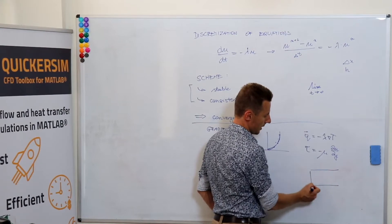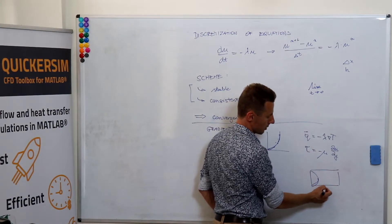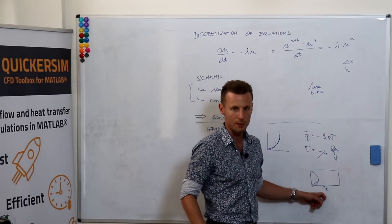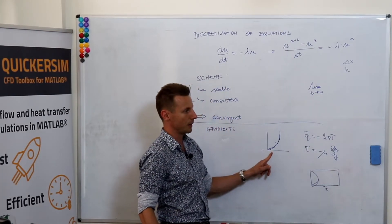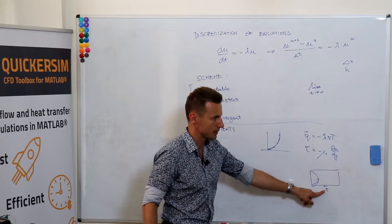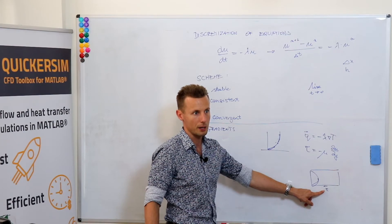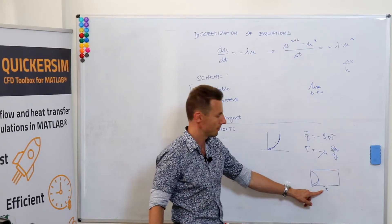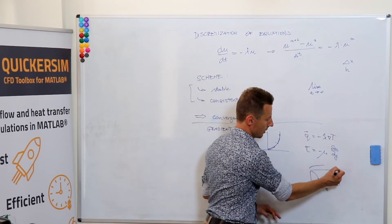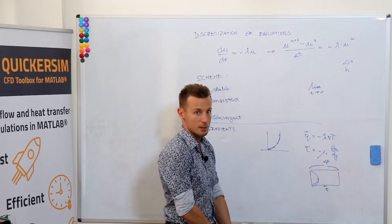We've been showing two days ago the example of the channel flow, where you've got the parabolic velocity distribution. You see the viscous forces — and these are the only friction forces in the system. So representing the gradients improperly means having underestimated shear forces, and this means having a wrong mesh here means having a completely wrong pressure drop measured from here to here.